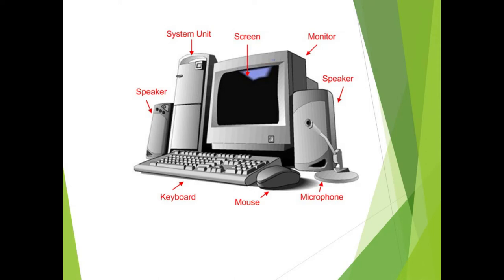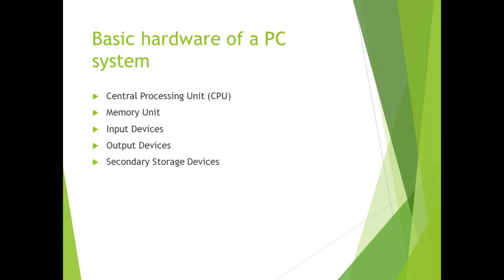In a computer, you put in data, it gets processed, and it gives you information as output. The basic functions of a computer are: it accepts input data, does processing, stores data, and gives output. There are basically two components of a computer — one is tangible and one is non-tangible. Tangible is hardware, which you can touch and feel. Non-tangible is software, which you can use but cannot physically touch.